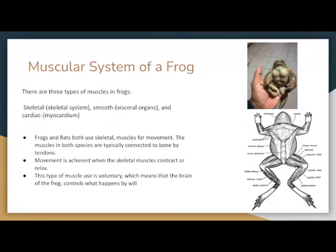The muscular system of a frog has three types of muscles: skeletal, smooth, and cardiac. Frogs and rats both use skeletal muscles for movement, and the muscles in both species are typically connected to bone by tendon. Movement is achieved when the skeletal muscles contract and relax. This type of muscle use is voluntary, which means that the brain of the frog controls what happens.